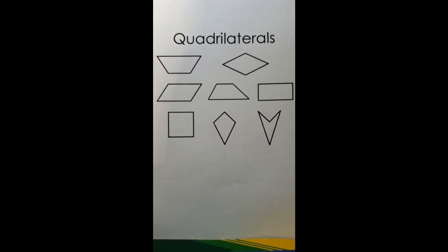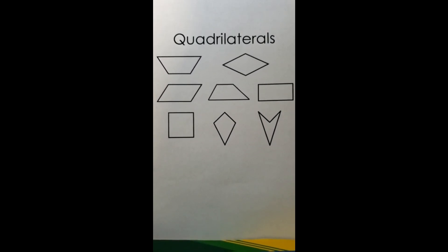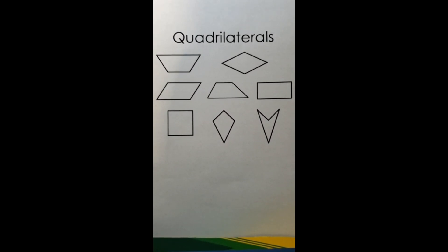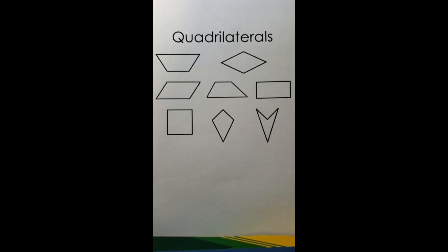Hey guys, Miss Miranda here. Today's lesson is all about quadrilaterals. Quadrilaterals are shapes that have four sides and four angles. This is lesson 11.3 in the Go Math book.